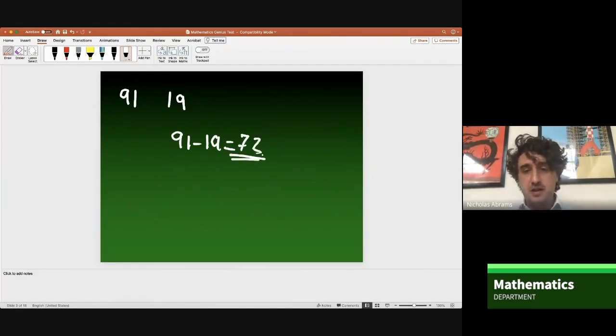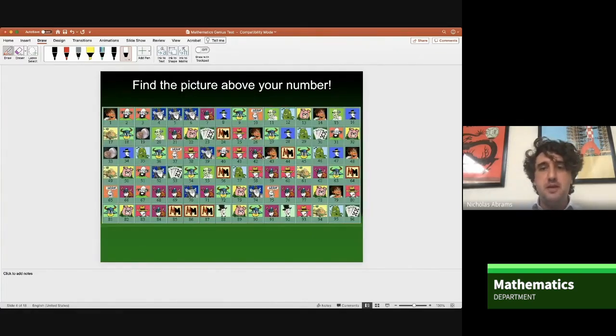And whatever your number is, that's the number that I want you to think about. You've done your subtraction, there'll be your number there. Now, how the genius test works is, if you look at the screen here, if you find your number and look at the picture above the number, if you're a mathematical genius, you'll be staring at a specific picture. There's only one picture that the geniuses always end up picking.